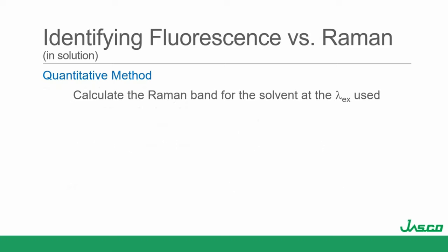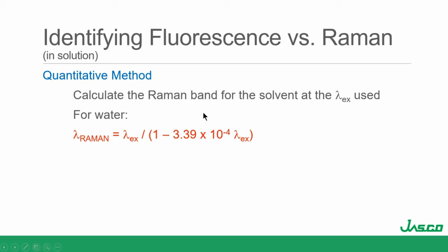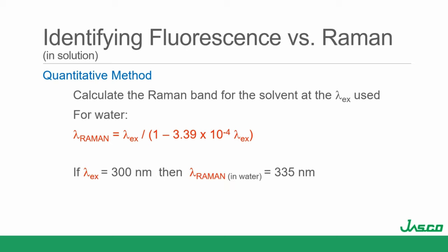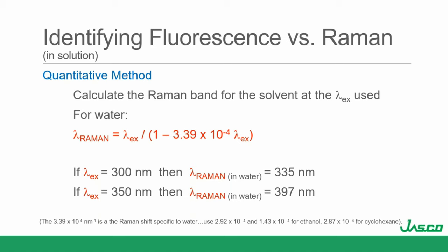Quantitatively, we can calculate the Raman band for the solvent at the excitation wavelength used. For water, it's this equation — you can use it for other solvents by substituting in the Raman shift constant for that solvent. If we excite at 300 nanometers, the Raman band should show up at 335 nm. If we do this at 350 nm, the Raman band will show up at 397 nm.